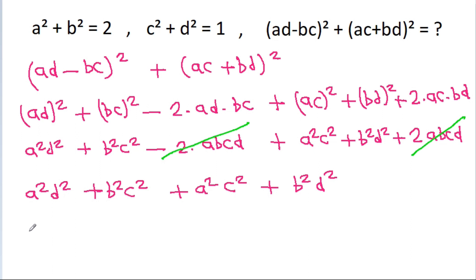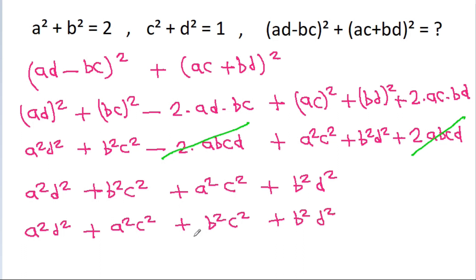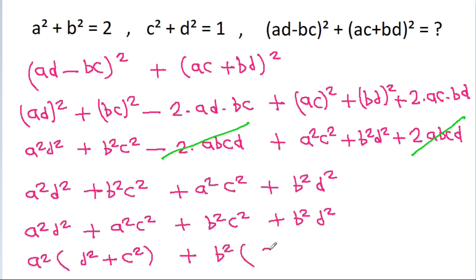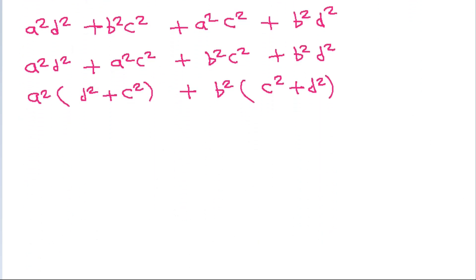And it is a square d square plus a square c square plus b square c square plus b square d square. We can take a square common and we get d square plus c square, plus here we can take b square common and we get c square plus d square. And now we can take c square plus d square common and we get a square plus b square.